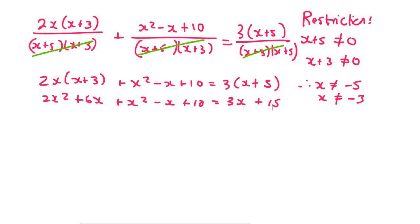Now we need to put all the like terms together. So I'm going to put these x squares together. That's going to be 3x squared. Then I'm going to say plus 5x on the left here because that's 6 minus 1 and then plus 10 equals to 3x plus 15. We then take the x's to the left where we're going to get minus 3x plus 10 minus 15.